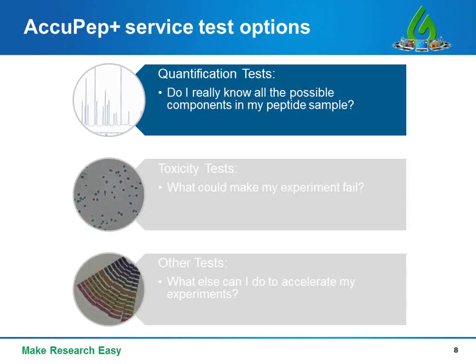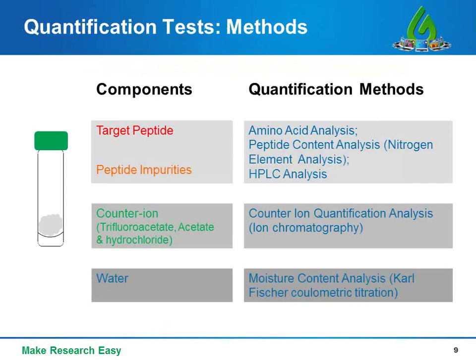Even for researchers who have been working with custom peptides for many years, the answer is often no. Generally, besides your target peptide sequence, there are peptide impurities, counter ions, and water in delivered peptides. These components are commonly found in all custom peptides, regardless of where you purchase them.